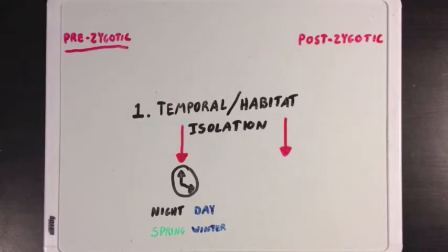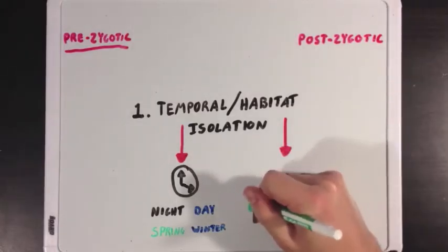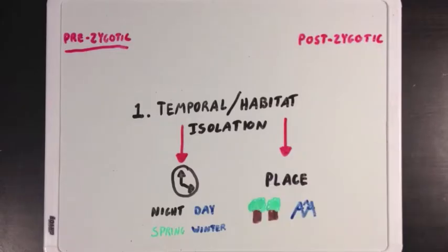Habitat isolation refers to the place where the organisms mate. Some may prefer mating in the forest, while others prefer mating in the mountains. And if two organisms don't find mates in the same place, then they are also isolated.